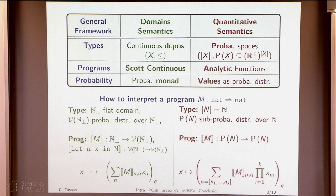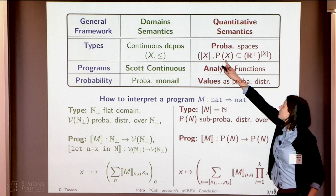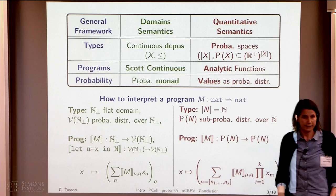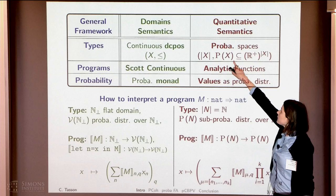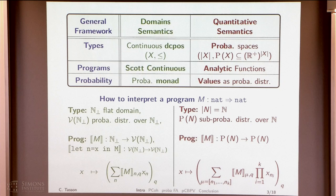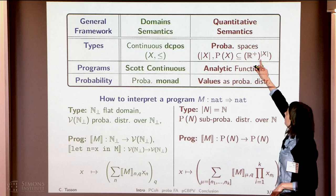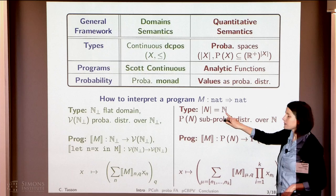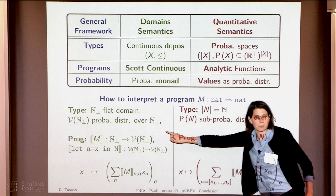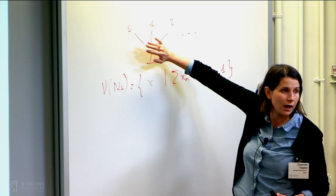Now for the quantitative semantics, we interpret types as probabilistic spaces which are convex spaces. We have a basis — a set of final states that can be compared with this one. P of x is made of vectors with positive coefficients. These positive coefficients account for two things: the probability to have a result, and the combinatorics of how many ways there are to get a result.